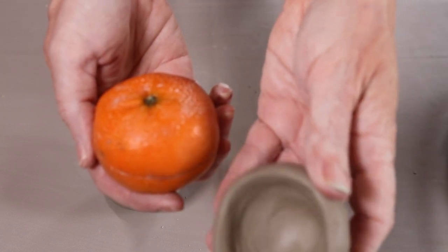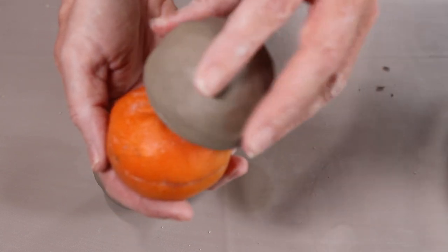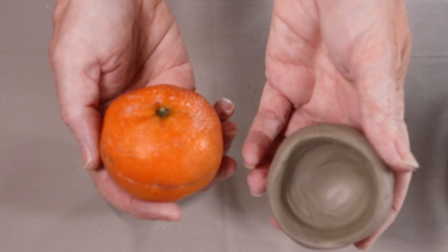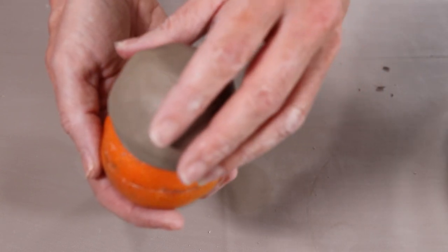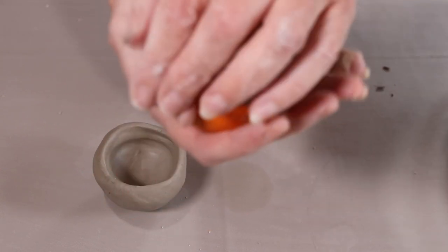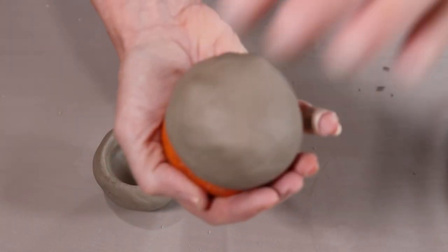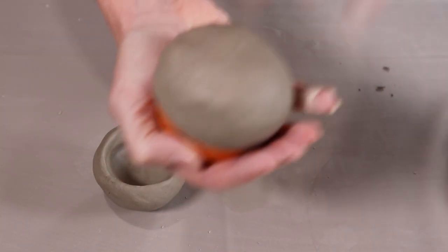What you need to do is take the half you've just made into a pinch pot and place it over the tangerine and we're just going to pat down. Pat, pat, pat.